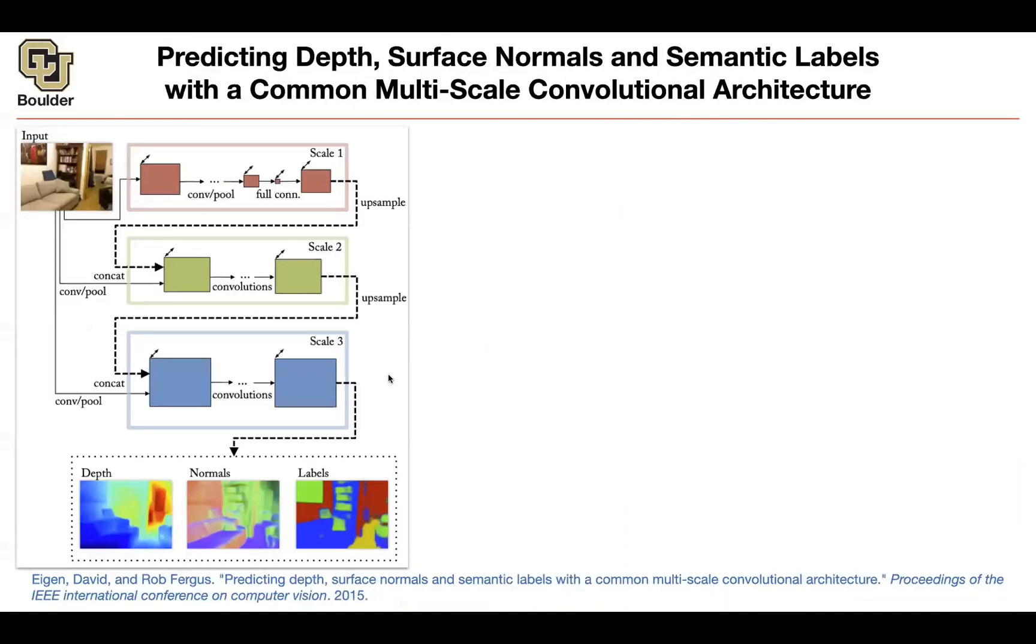The next architecture extends what we just came up with to have multiple scales. You can use the same architecture for three different tasks: depth estimation, normals or surface normal estimation, and semantic segmentation.